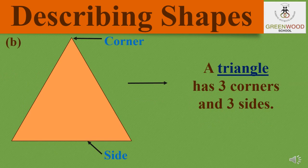The second one is triangle. As you can see in the picture, the triangle has one, two, and three corners, as well as one, two, and three sides.